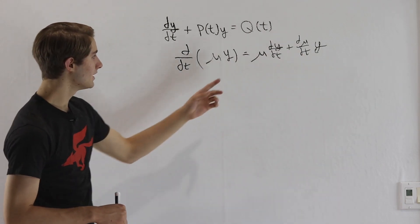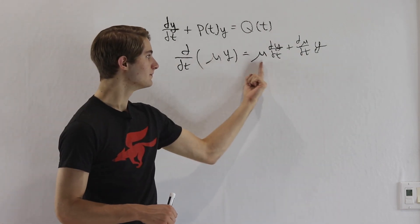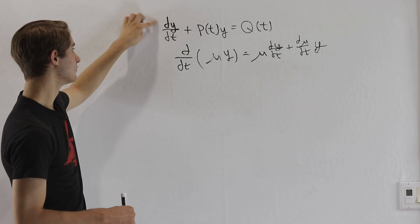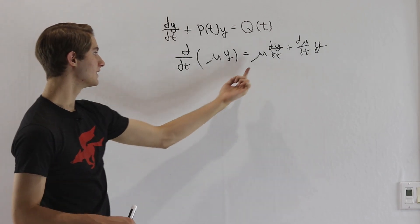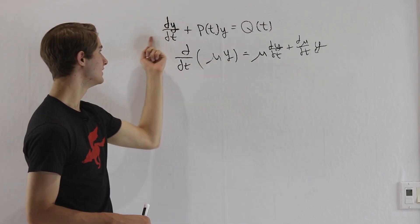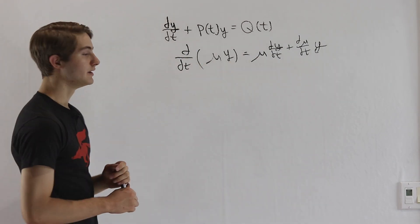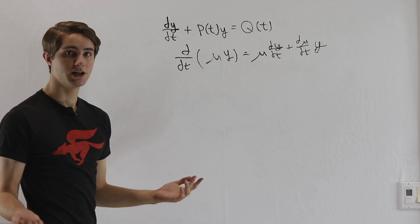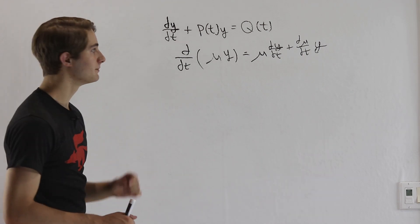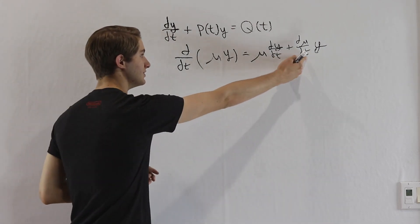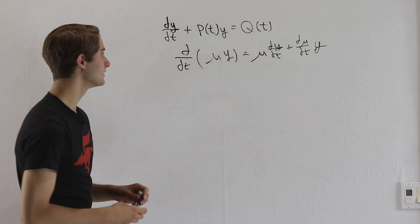In order to do that, we're going to have to figure out some mu that we can multiply so that we get this mu next to the dy/dt. We could multiply by anything we want, but we need it to be useful so that it turns into this product rule form.